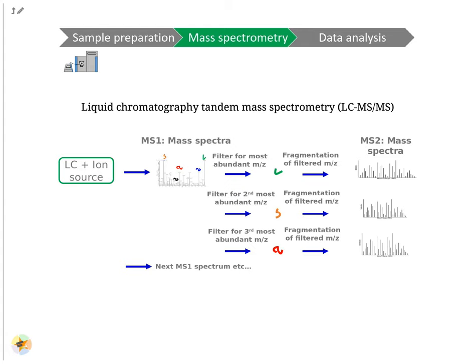From the MS1 spectra, the N most abundant peptide peaks are determined and these top-N peptides get fragmented. N is typically between 3 and 20; this example shows a top-3 method. The filter unit of the mass spectrometer, a quadrupole, allows only these peptides to pass. One after the other is selected and then fragmented by collision with neutral gas molecules. This fragmentation breaks the peptide bonds and generates peptide fragments, which are measured again via the mass analyzer and detector. These spectra are called MS2 spectra. After all top-N peptides are fragmented and measured, another full MS1 spectrum is acquired. MS1 and MS2 spectra are acquired in this way during the elution of the sample from the LC.